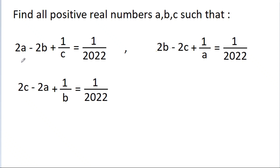In this video, we have given that 2a - 2b + 1/c is equal to 1/2022, and 2b - 2c + 1/a is equal to 1/2022, and 2c - 2a + 1/b is also equal to 1/2022, and we have to find all positive real numbers a, b and c.